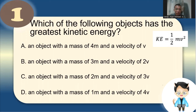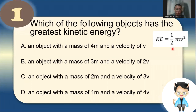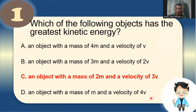Calculating: Letter A — 4m and v: ½ × 4 × 1² = 2. Letter B — 3m and 2v: ½ × 3 × 4 = 6. Letter C — 2m and 3v: ½ × 2 × 9 = 9. Letter D — 1m and 4v: ½ × 1 × 16 = 8. So the answer is letter C, 2m and 3v, with the greatest kinetic energy of 9.